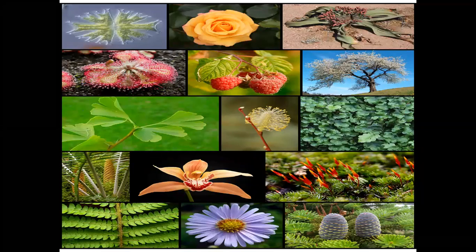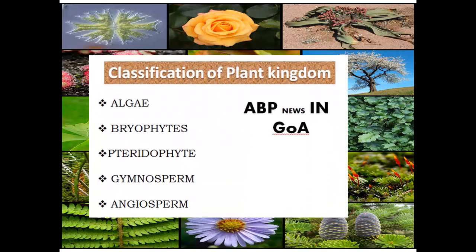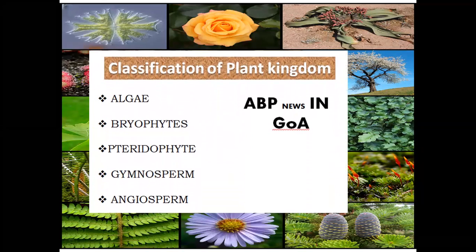For the classification of Plant Kingdom, I have made a sentence: ABP News in Goa. ABP News is very easy to remember, we all see it. So ABP News in Goa — Goa is according to our convenience.